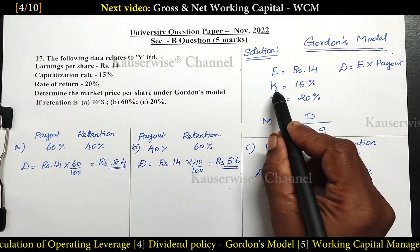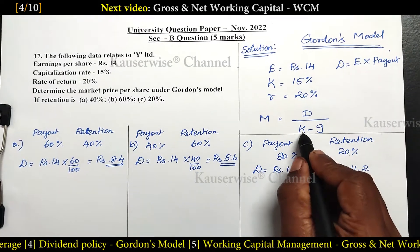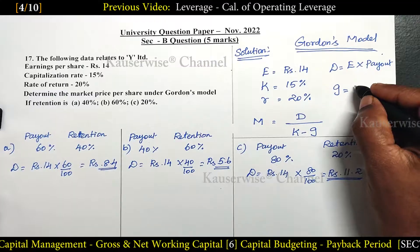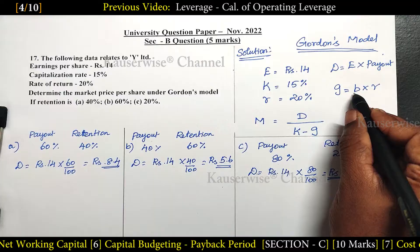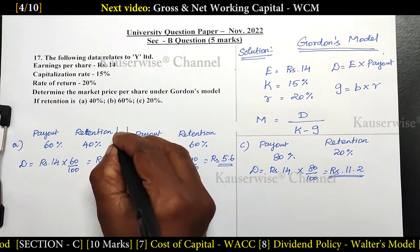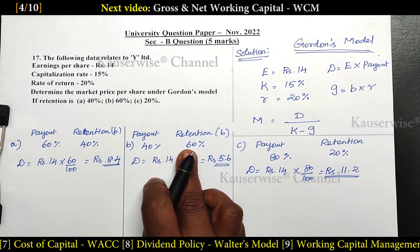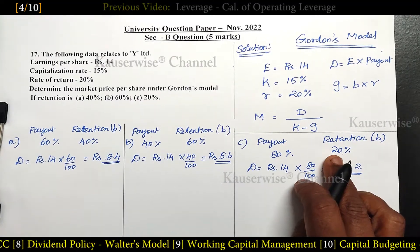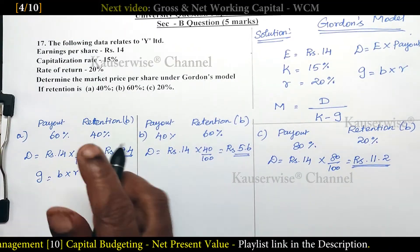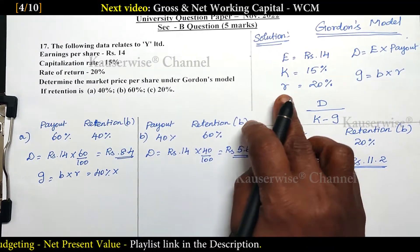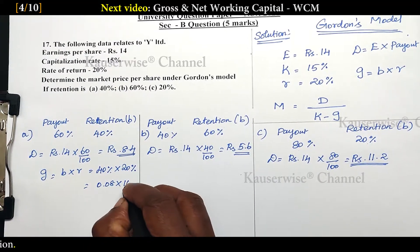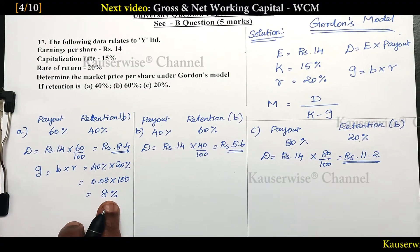Next is K, the capitalization rate, which is 15% as given in the problem. Then G, the growth rate. The formula for G is: G = B × R, where B is the retention ratio and R is the rate of return. For Case 1: G = 40% × 20% = 0.08, which is 8%. For Case 2: G = 60% × 20% = 0.12, which is 12%.